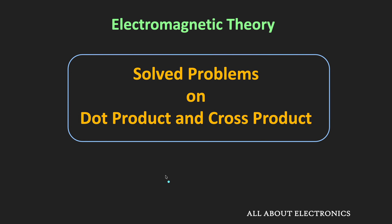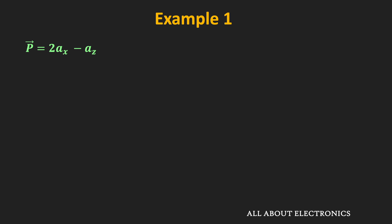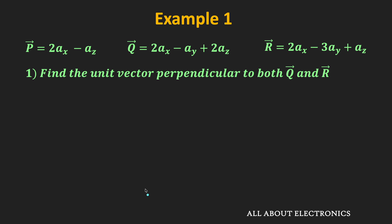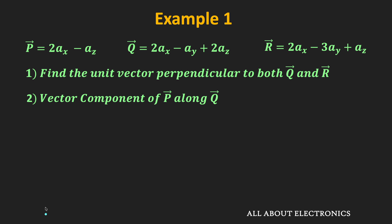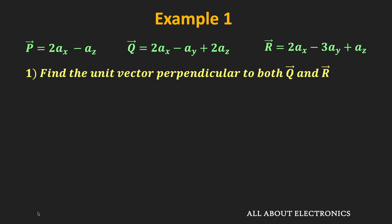In the first example, we have been given three vectors P, Q, and R. First, we have been asked to find the unit vector that is perpendicular to both vectors Q and R. We know that the unit vector perpendicular to both Q and R can be given as Q×R divided by the magnitude of Q×R.